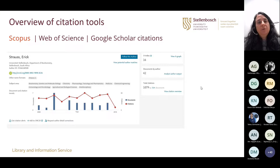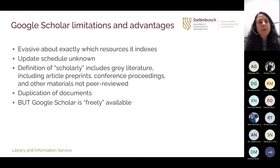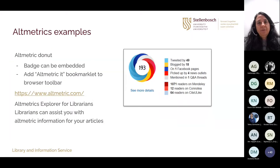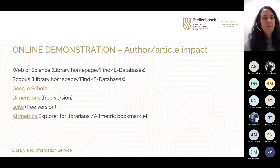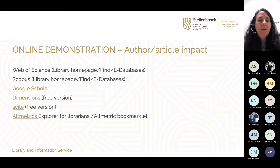Now I want to quickly show you some of the tools — I'll go online now. We'll look at Dimensions, Scite, and some others. I'm not going to look at Google Scholar in detail now. But I want to quickly ask: are you from universities that subscribe to Web of Science and Scopus? Maybe show your hands. There are thumbs up — I think most of you will have access to Web of Science or Scopus, so I will quickly show you those as well.